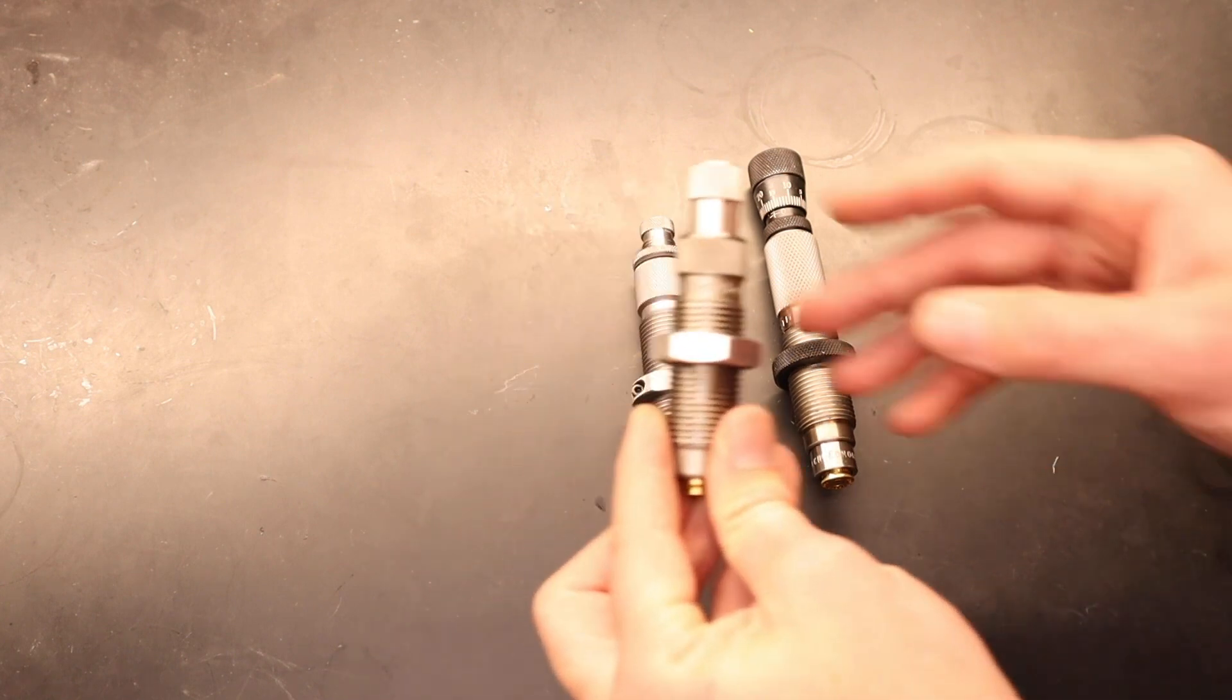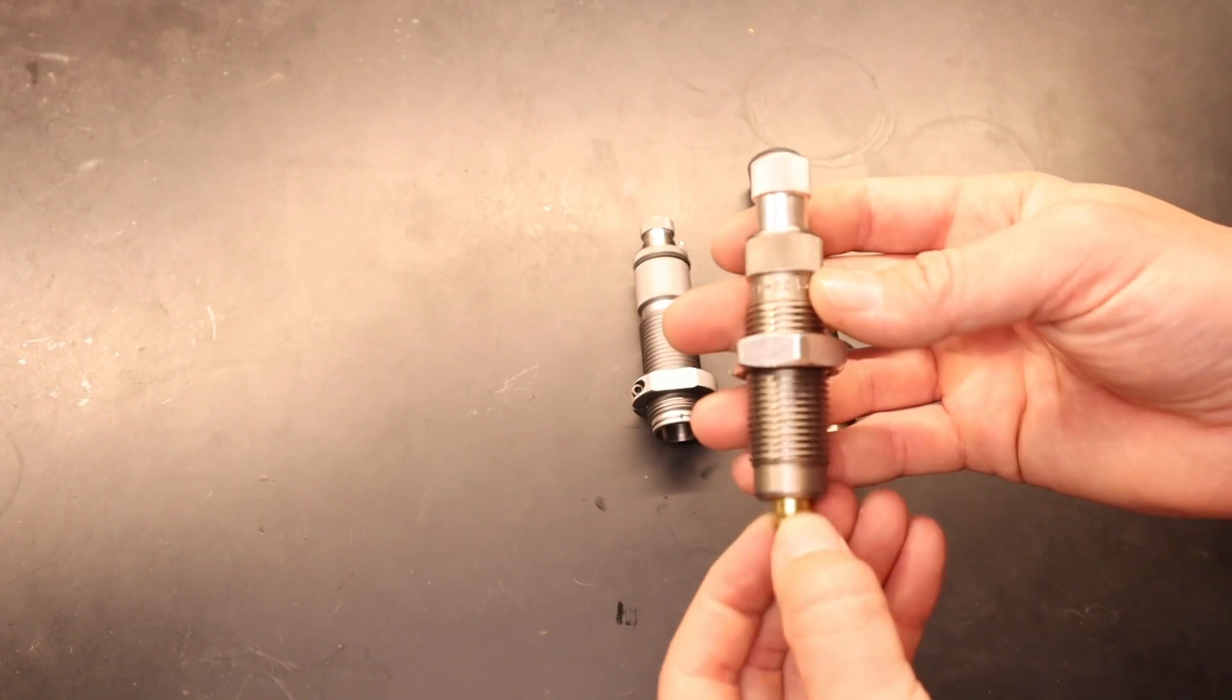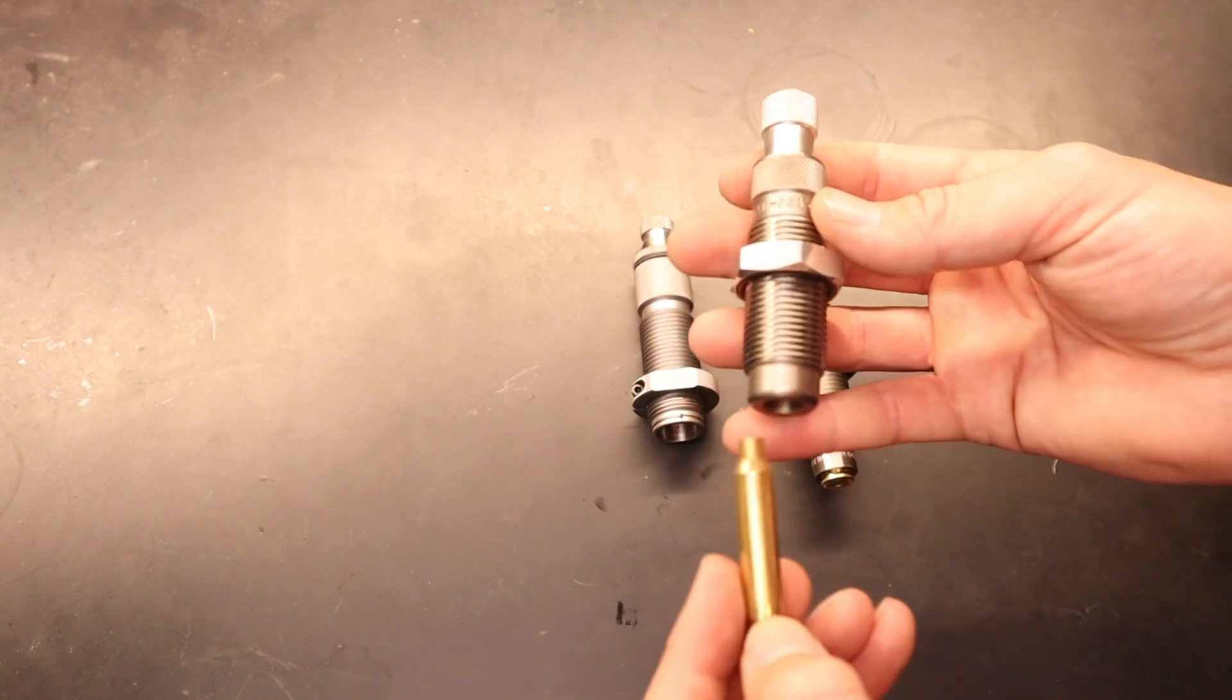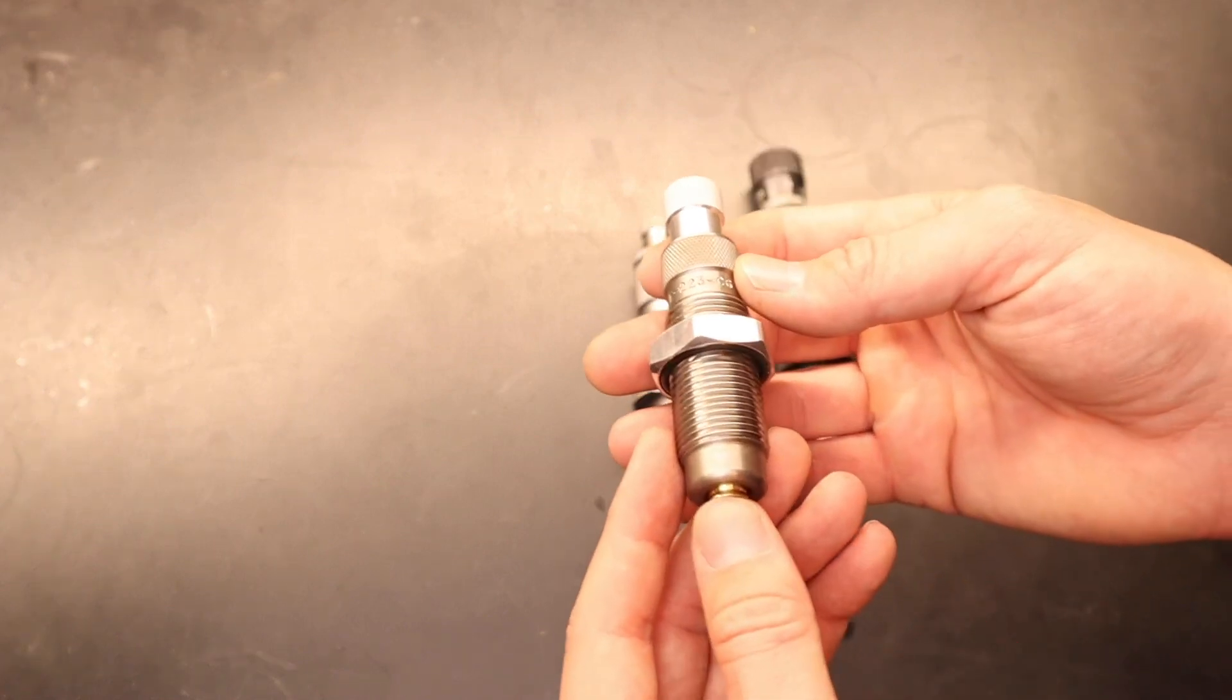So starting off, we have a Lee seeding die. This one is cartridge specific, so this one is a .223. We have a piece of .223 brass in here. Essentially, there is a little chamber into the die itself, and as we seat this up,